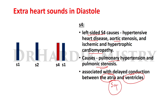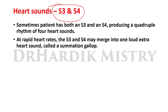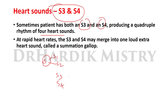Sometimes patients have both S3 and S4 audible on the stethoscope, producing a quadruple rhythm of four heart sounds. Normally only S1 and S2 are heard; when all four heart sounds are audible — whether through the diaphragm or bell — this condition is called quadruple rhythm.